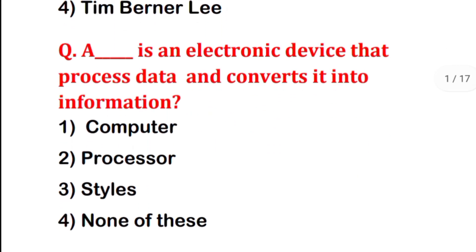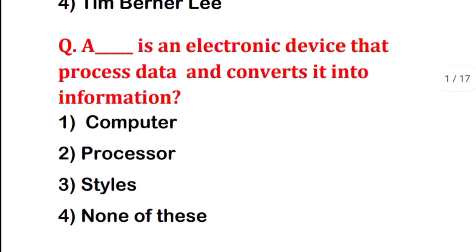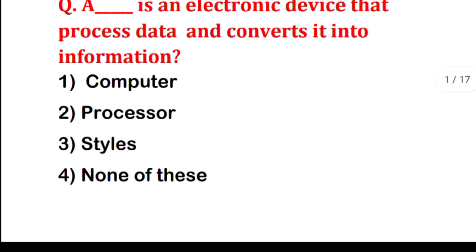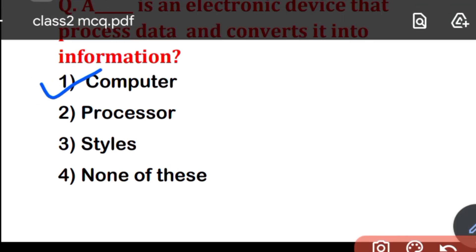Next question: a blank is an electronic device that processes data and converts it into information. The four options are: Computer, Processor, Styles, or None of these. The correct answer is the first option — Computer.